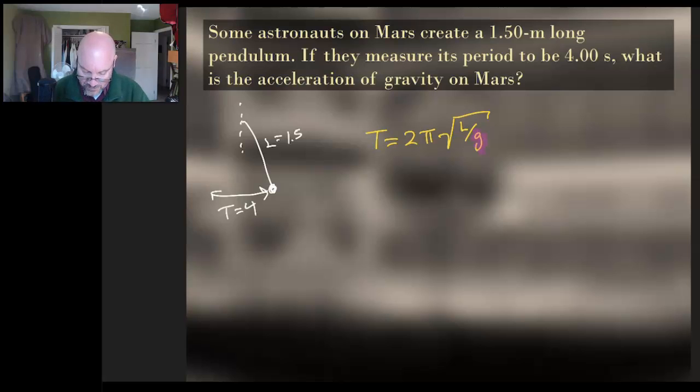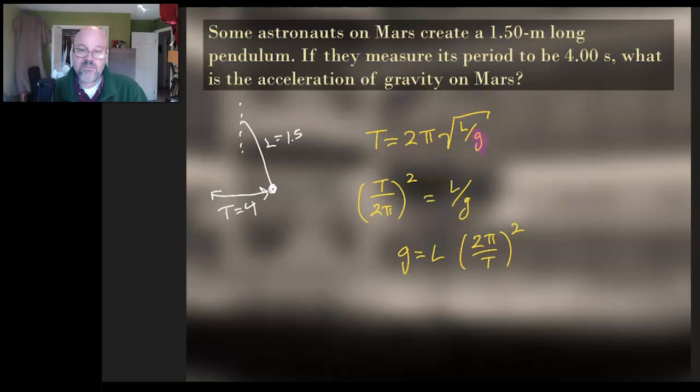Now, once I do my algebra, this is going to turn out to be almost the same result. So we're going to have T over 2 pi quantity squared is L over G. So I just did a couple of steps of algebra there. We're solving for G. So once again, yeah, this one turned out to be almost identical, really identical. And it's kind of interesting that gravity for a pendulum has the same role as the spring constant in a spring mass system. So that's kind of interesting.